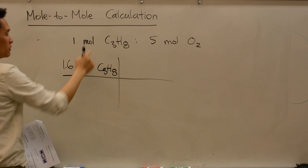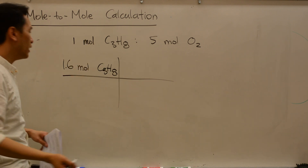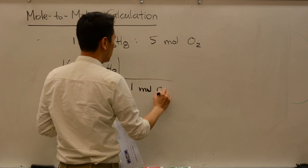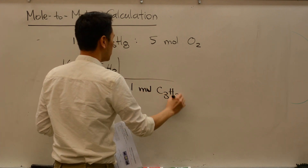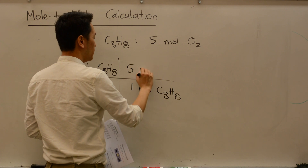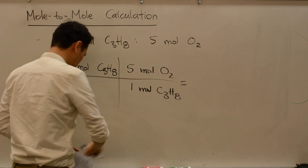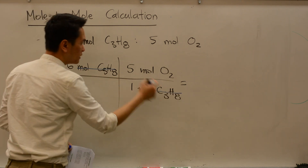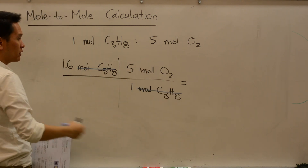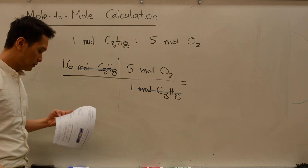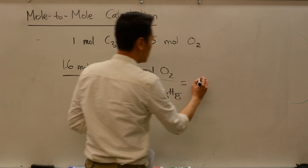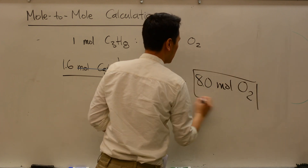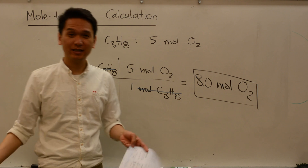We just need this conversion factor to tell us how many moles of oxygen we get. This would be 1 mole of propane gas to 5 moles of oxygen. Doing our unit analysis tells us we are going in the right direction. So 1.6 times 5 gives you 8.0 moles of oxygen — answer C.